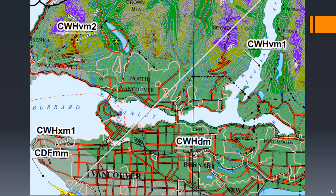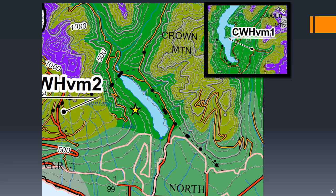You can see in the area around our study site there are three different subzones or variants. The dark green color is CWH-VM1, the paler green color is CWH-DM, and the yellow-green color is CWH-VM2. So if we zoom in a little bit closer, those two different green colors are a little bit easier to tell apart, and we can see clearly that we're in CWH-VM1.